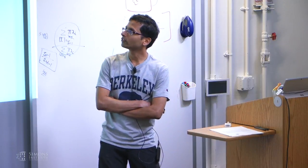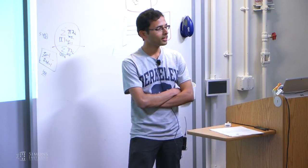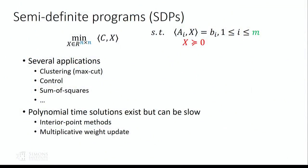As the title indicates, we are interested in solving semidefinite programs. These are problems where we have to minimize a linear function c times x, subject to linear constraints ai x equal to bi, but with the additional constraint that x has to be positive semidefinite — meaning x is a symmetric matrix and all its eigenvalues are non-negative. It has several applications, and there also exist polynomial time solutions including the ellipsoid method, interior point method, multiplicative weight update, and so on.